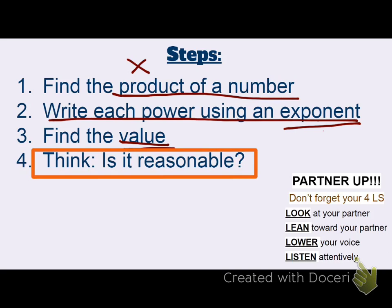So to recap: 1 — find the product of the factors. 2 — write each power using that little exponent. 3 — solve, find the value. And then finally, check and see if it's reasonable. Let's see these steps in action.